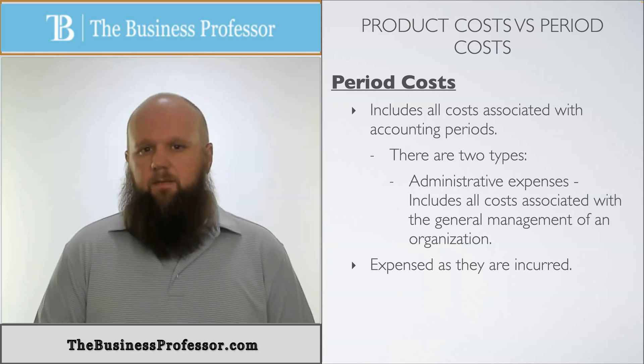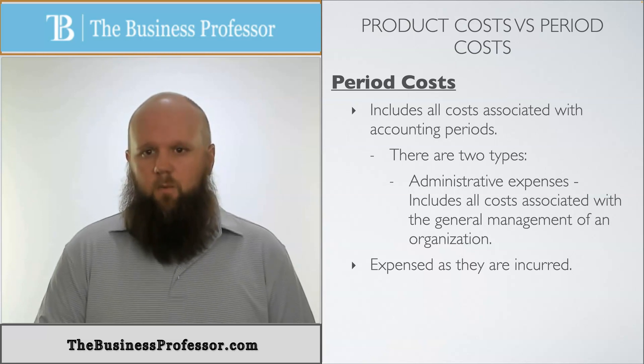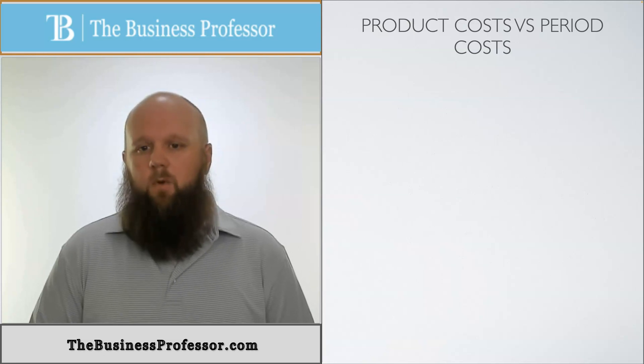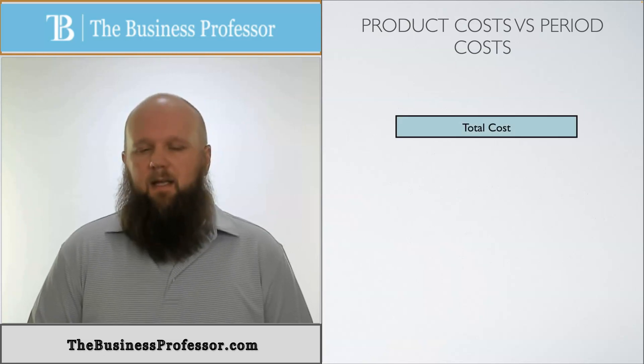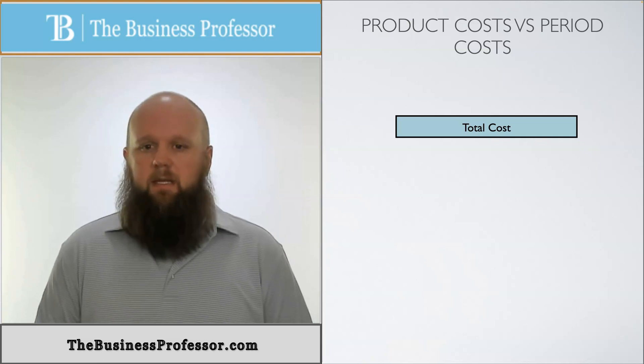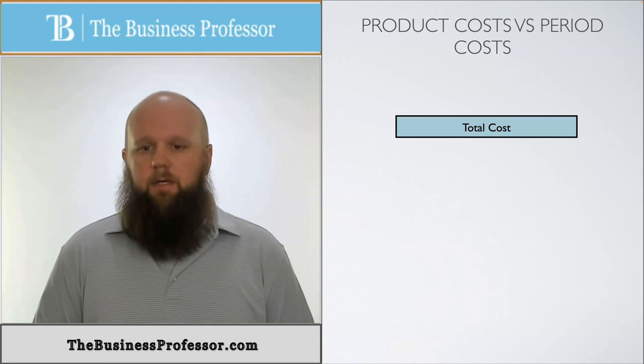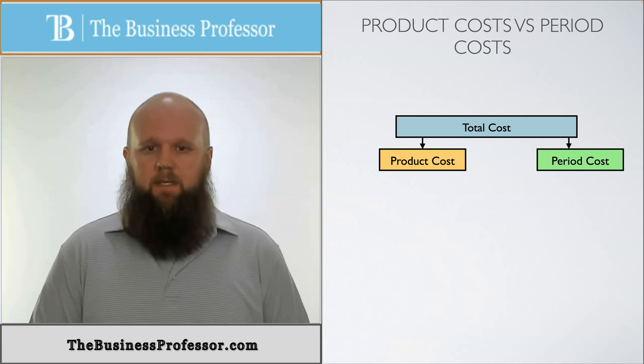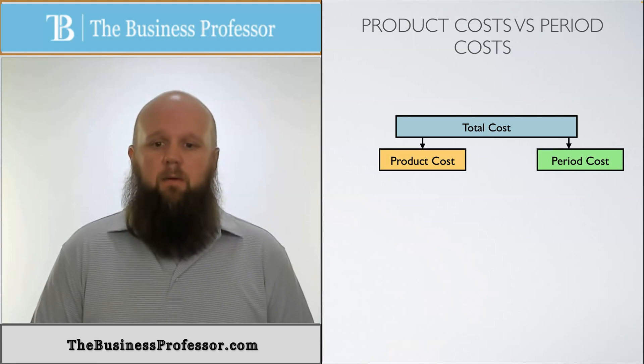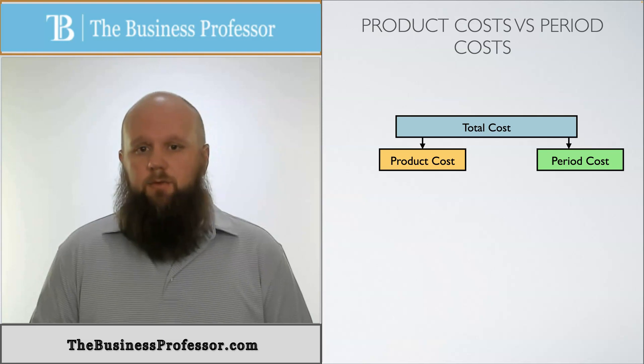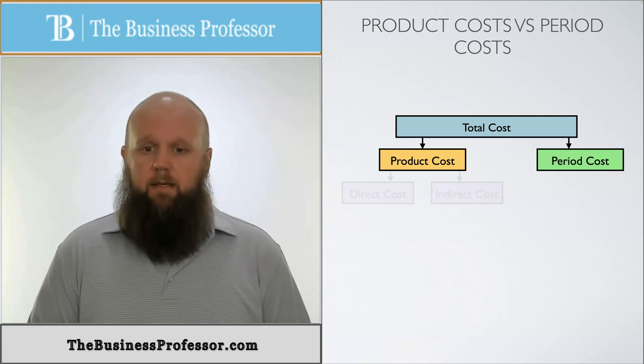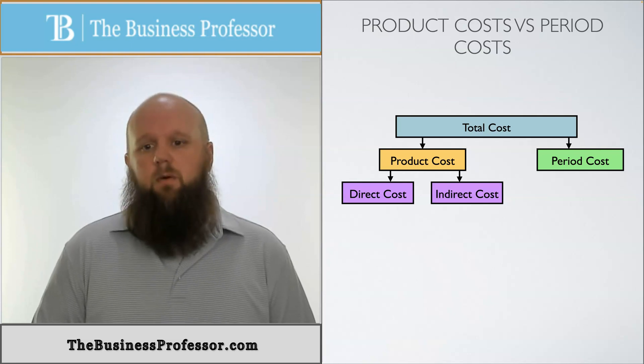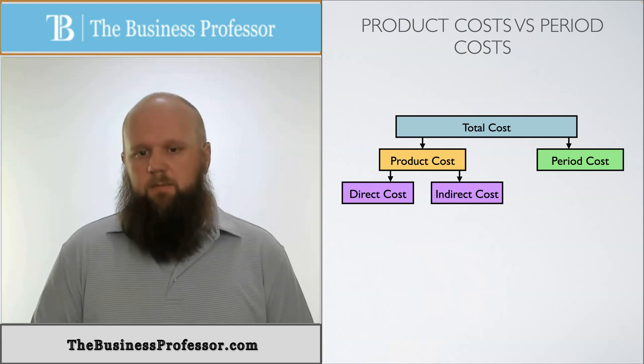Now to kind of put this into perspective, because we can break these things down. If we look at a product's total cost or a company's total cost, if total cost is all the costs, we can break these down into two categories: product cost and period cost, just like what we said. Now we can also break down product costs into two categories: direct costs and indirect costs. Direct costs, again, are easily traceable, whereas indirect costs are not easily traceable.